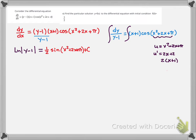Now we can find that c value by looking at our initial conditions of 0 comma 5 over 2. That means ln of 5 over 2 minus 1 equals 1 half sine of a bunch of zeros plus pi plus c. Well sine of pi is 0, so that means our constant c equals the natural log of 3 halves.